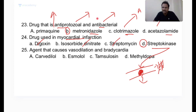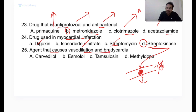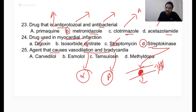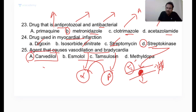Agent that causes both vasodilation and bradycardia: vasodilation results from alpha blockade; bradycardia results from beta blockade. A drug that blocks both alpha and beta receptors is carvedilol. Esmolol is only a beta blocker, tamsulosin is only an alpha blocker, and methyldopa is a centrally active alpha-2 agonist. Only carvedilol causes both vasodilation and bradycardia. This concludes the pharmacological drug classification review.